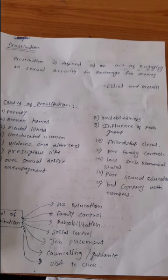Next is low socioeconomic status. Due to the low socioeconomic status, some people may be doing prostitution. Next is poor sexual education. Next is bad company with the members — in the family or in the friend circle.